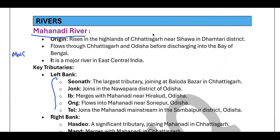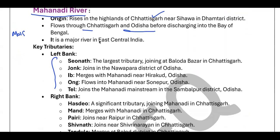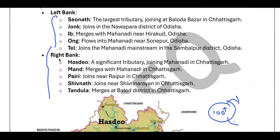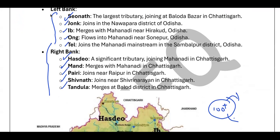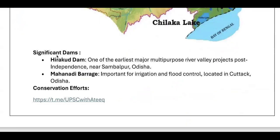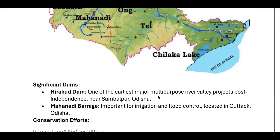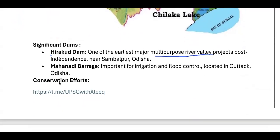The Mahanadi rises in the highlands of Chhattisgarh near Sihawa in the Dhamtari district. It flows through Chhattisgarh and Odisha before discharging into the Bay of Bengal. It is a major river in east-central India. Left bank and right bank tributaries include Seonath, Jonk, Ib, Ong, Tel, Hasdeo, Mand, Pairi, Sheonath, and Tandula. The very important Hirakud Dam is also present on the Mahanadi — one of the earliest and major multi-purpose river projects.